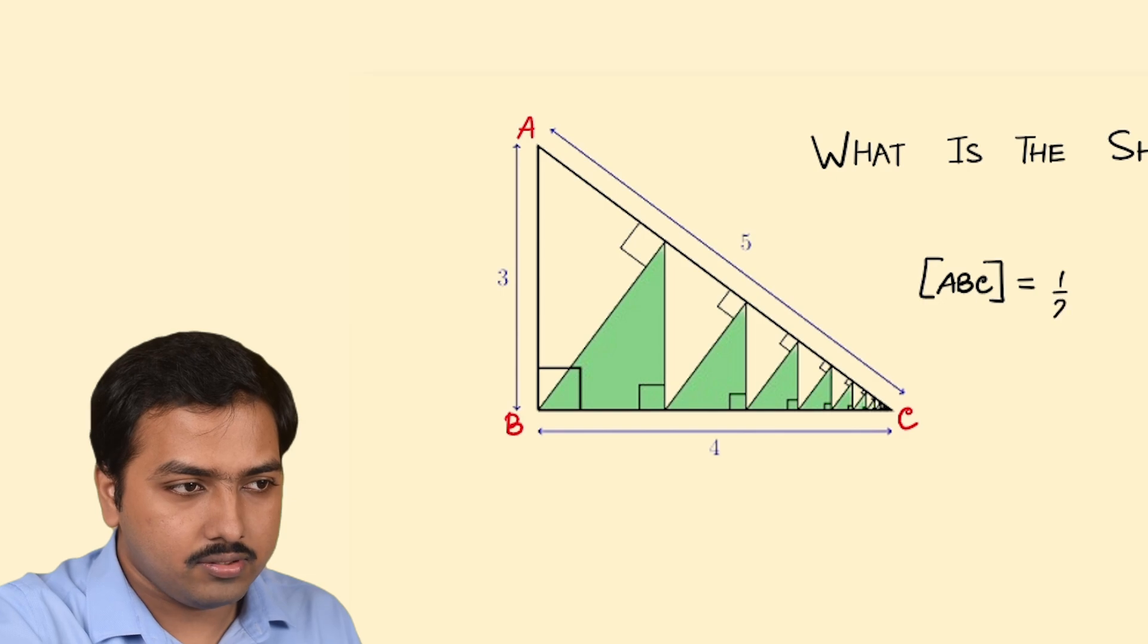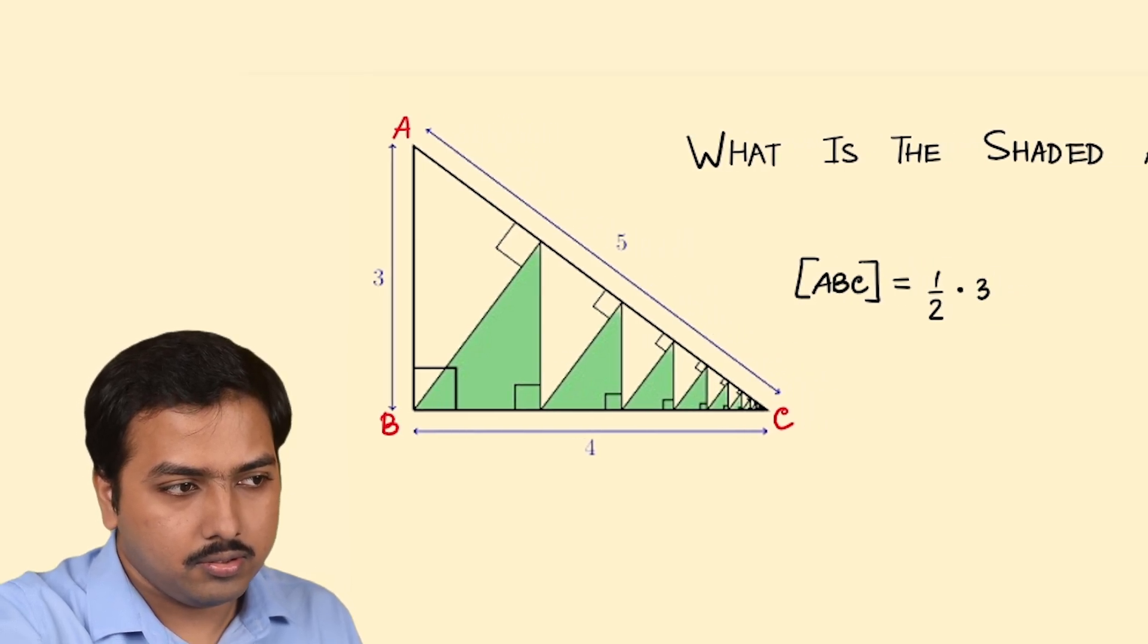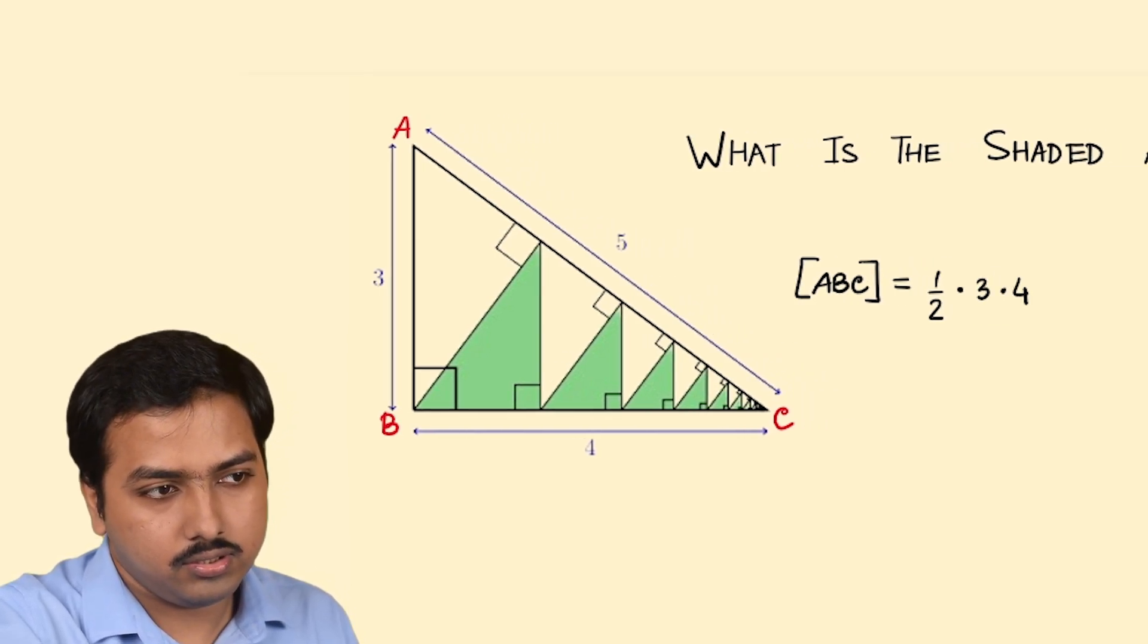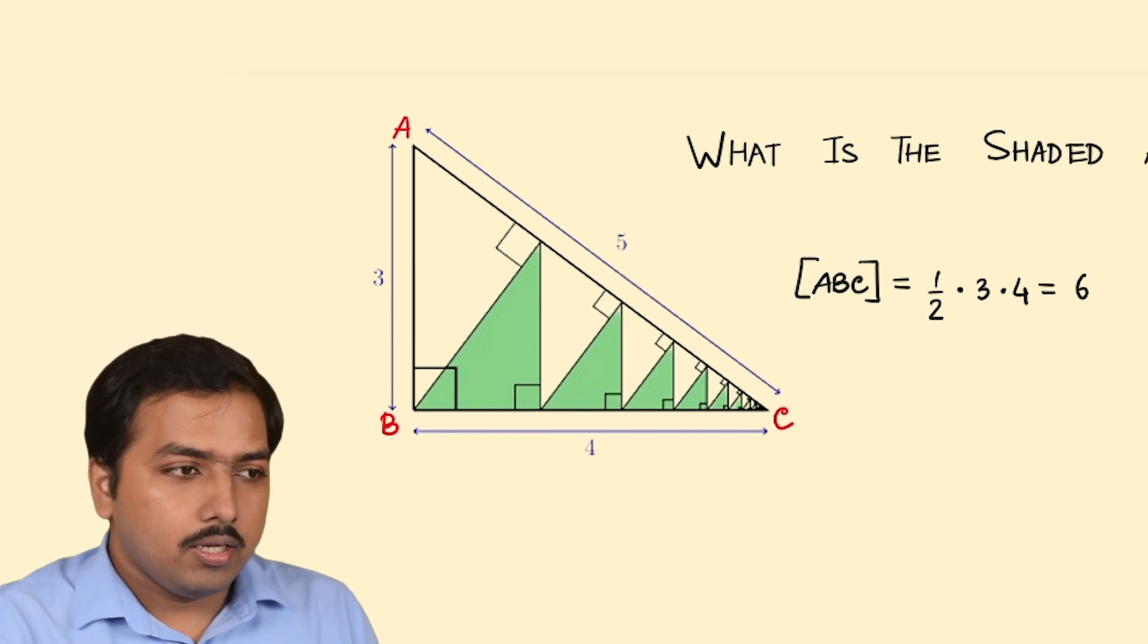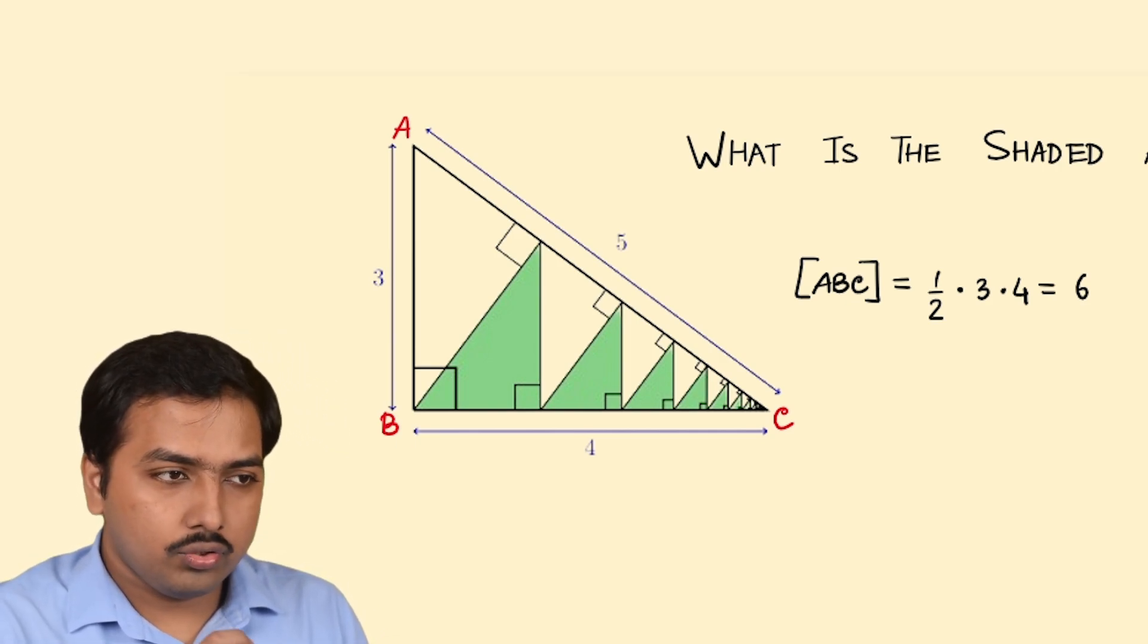what is the area of the ABC? It should be half times 3 times 4, which is 6. We can know this one. What's next? What can we do further?